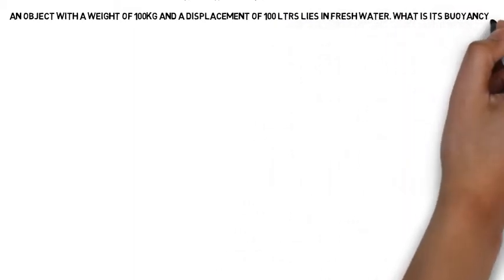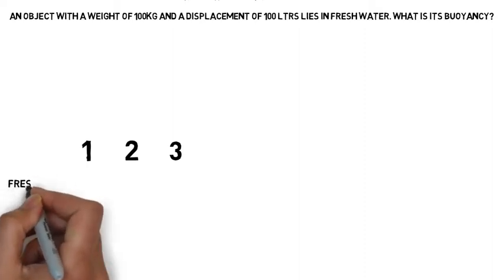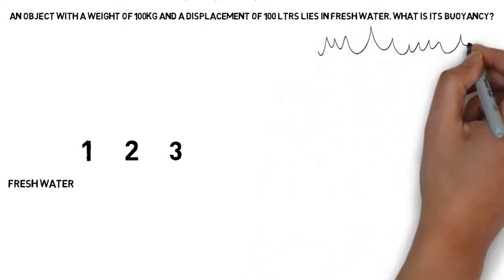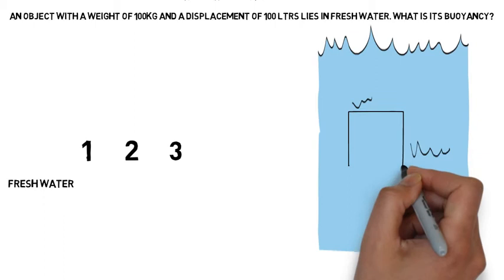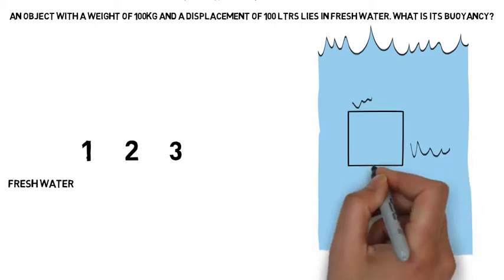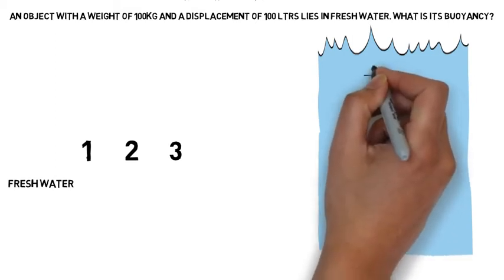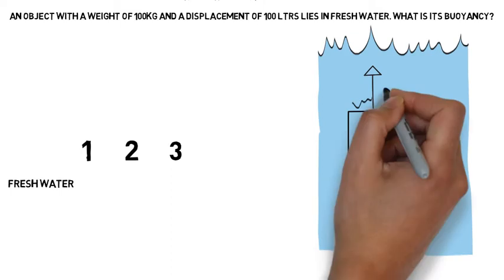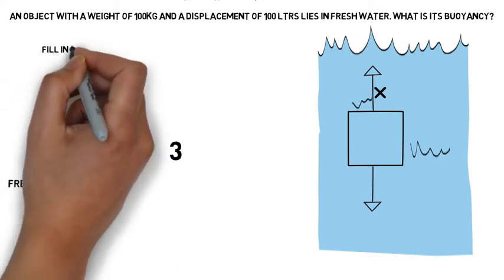Let's look at how we might be presented with this question in an exam. There is a one-two-three approach to find the answer, but what I like to do first is draw a diagram of what the question is describing — a body of water with an object in it, a downward force arrow, and an upward force arrow. Next to the up arrow I put a multiplication sign to remind me there is a calculation needed for the upward force.